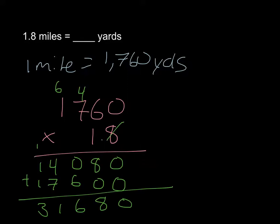And then you solve it. Don't forget your decimal. I have zero decimals in the first one, but I have one here, so I need to make sure that I put a decimal one place over. Don't forget it, it's very important. Then you can look at your solution and say that 1 and 8 tenths of a mile is the same as 3,168 yards. Again, don't forget to label your answer.